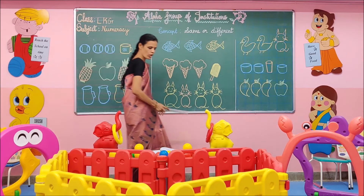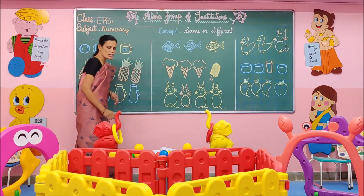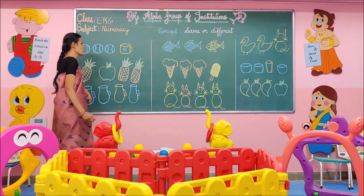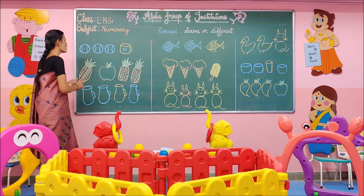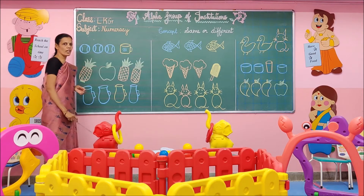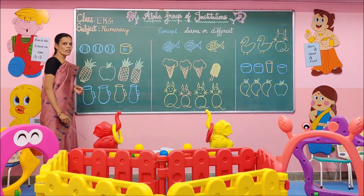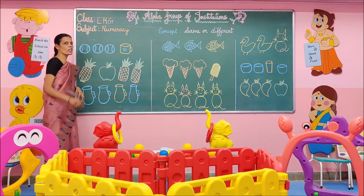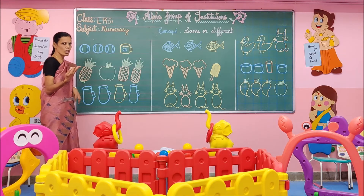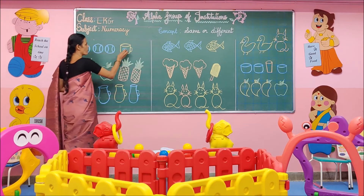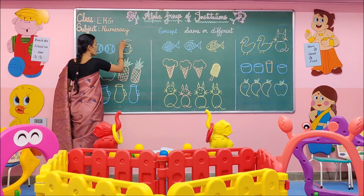Now we are going to circle the different object. In this group, which one is different? Cup is different. Cup does not belong to this group. So I have to circle that cup.